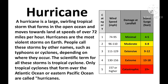A hurricane is a large swirling tropical storm that forms in open ocean and moves towards land at a speed of over 72 miles per hour. Hurricanes are the most violent storms on earth. People call these storms by other names such as typhoons or cyclones depending on where they occur. The scientific term for all these storms is tropical cyclone. Only tropical cyclones that form over the Atlantic Ocean or eastern Pacific Ocean are called hurricanes.